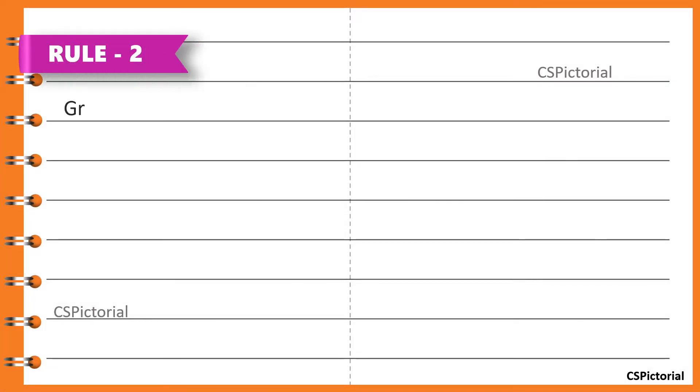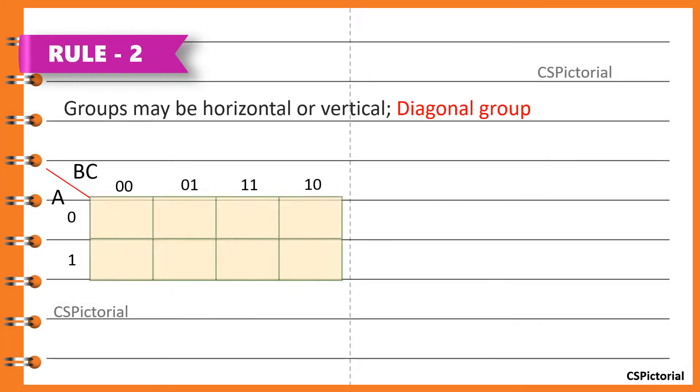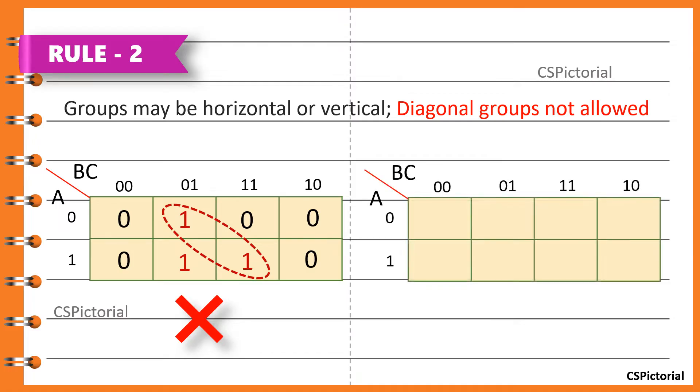Groups may be horizontal or vertical, but they cannot be diagonal. This grouping is wrong because it's done in a diagonal direction. These two groups are perfectly held out.